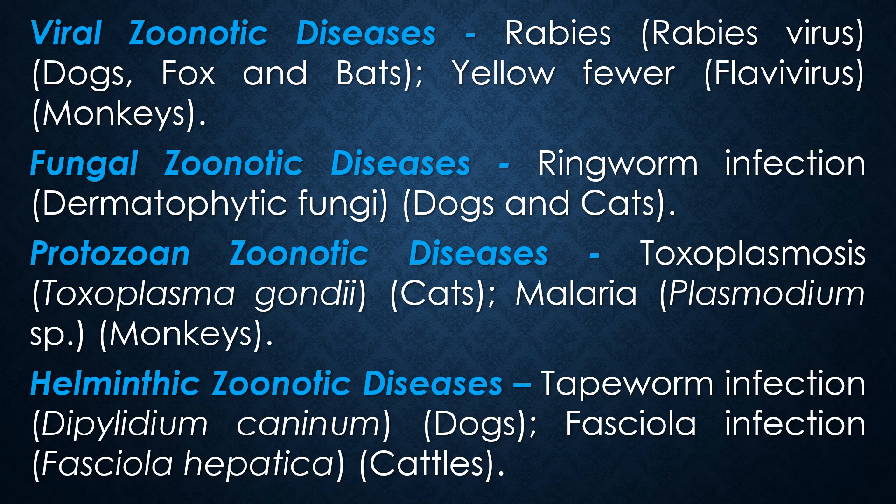Examples of viral zoonotic diseases include rabies caused by rabies virus from dogs and bats, and yellow fever caused by Flavivirus from monkeys. A fungal zoonotic disease example is ringworm infection caused by dermatophytic fungi from dogs and cats. Protozoan zoonotic diseases include toxoplasmosis caused by Toxoplasma gondii from cats, and malaria caused by Plasmodium species from monkeys. Helminthic zoonotic diseases include tapeworm infection caused by Dipylidium caninum from dogs and fascioliasis caused by Fasciola hepatica from cattle.